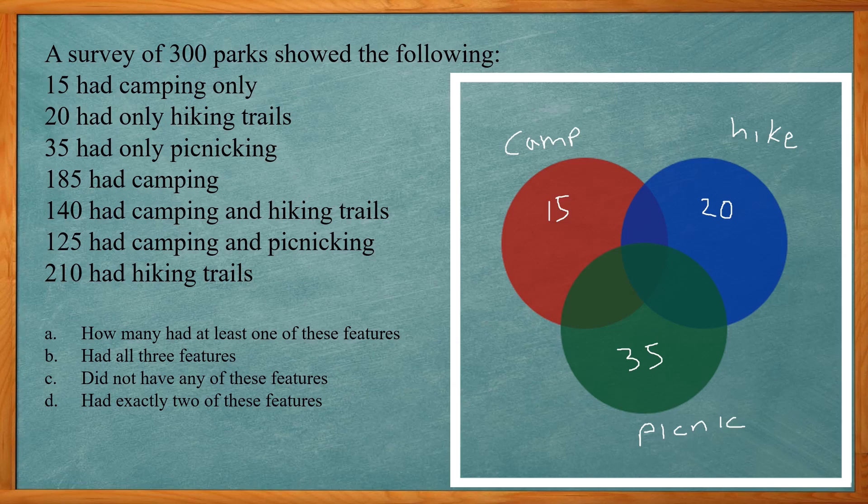Alright 140 had camping and hiking trails so camping and hiking, red and blue. Now that whole section where the red and blue intersect is 140 but I don't know how many in just camping and hiking and how many in all three. So I'm just gonna put 140 in the middle here for a placeholder.